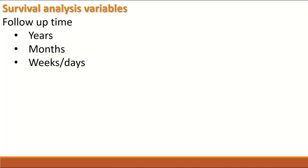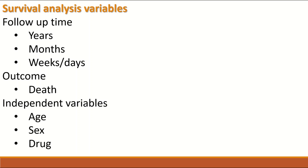Survival analysis can have multiple variables. The essential follow-up time variable can be measured in years, months, weeks, days, and so on. The outcome, which is essential, is binary — yes or no, lived or died, has the disease or doesn't. So the outcome is a binary or categorical variable, while time is a continuous variable. Additional independent variables such as age, sex, and drug intake can also be included.